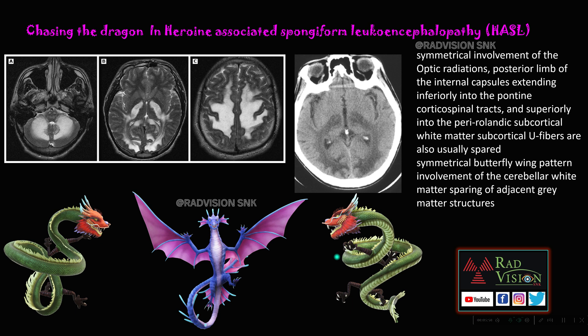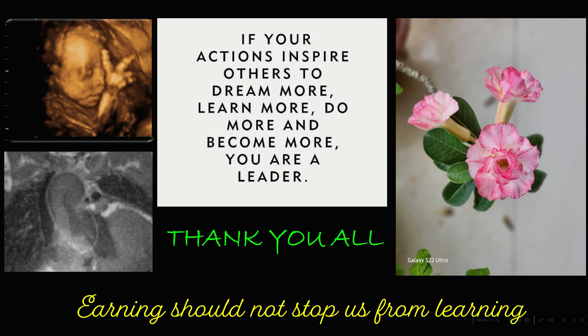I have given a graphic depiction where you can see two dragons trying to fight or chase — that is the chasing the dragon appearance. This appearance can also be seen in heroin-associated spongiform leukoencephalopathy. Remember, the chasing the dragon sign or appearance is classically seen in heroin-associated spongiform leukoencephalopathy, but it is not pathognomonic — it can also be seen in other toxic leukoencephalopathies. Thank you all.